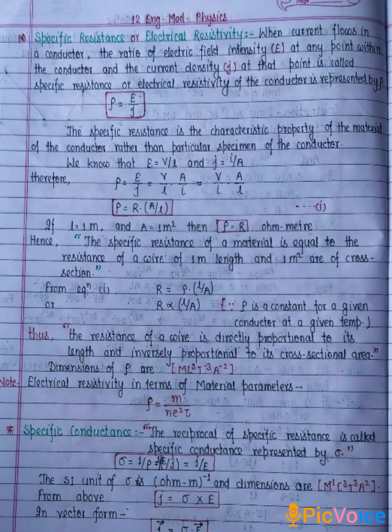If L is equal to 1 meter and A is equal to 1 meter square, then rho is equal to R ohm meter. It is the unit of specific resistance or electrical resistivity. Hence, the specific resistance of a material is equal to the resistance of a wire of 1 meter length and 1 meter square area cross-section.